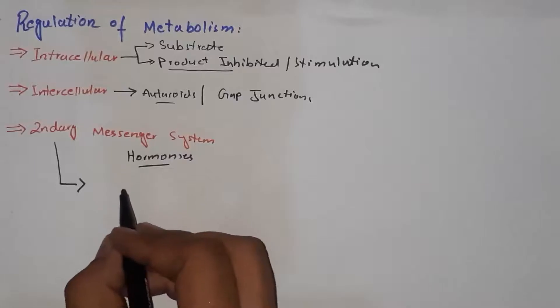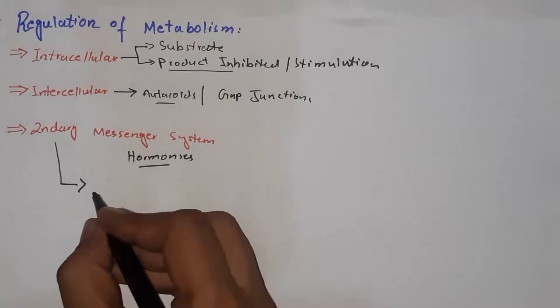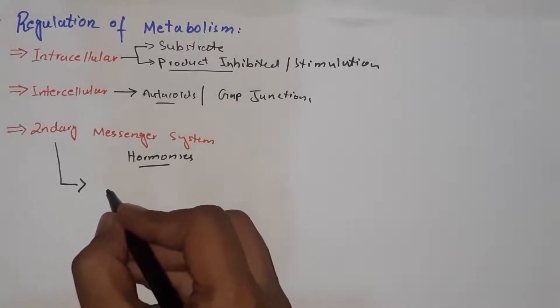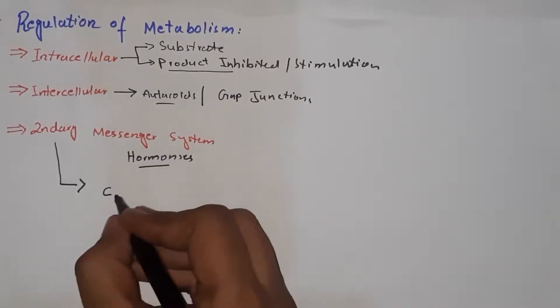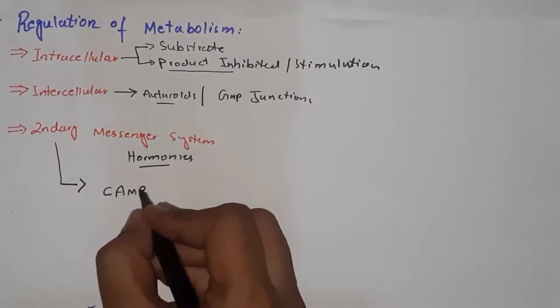Among the secondary messenger systems, we will discuss here the adenylyl cyclase system, which proceeds and exerts its effect via the cyclic AMP pathway.